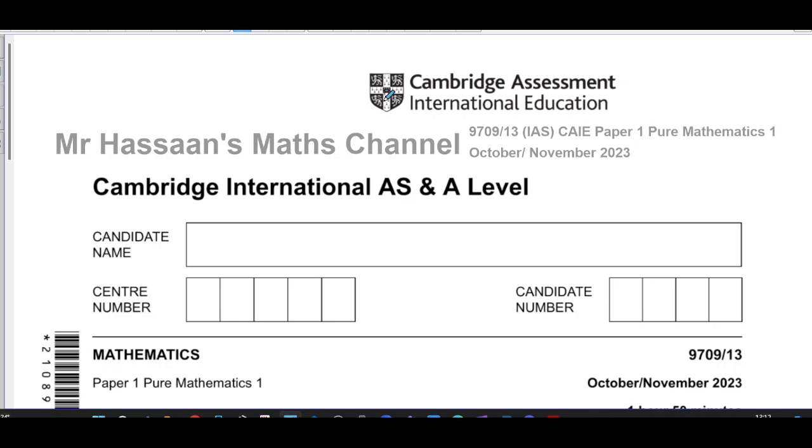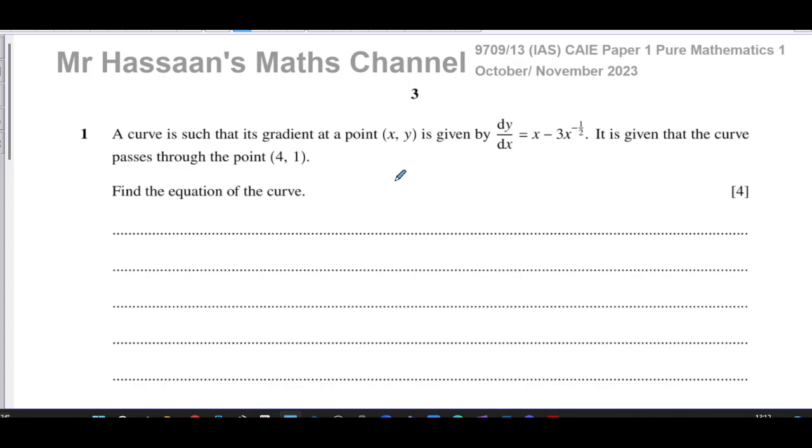I can explain keeping in mind the type of mistakes that students have made so you guys can learn from mistakes of each other. Question number one is about a curve such that its gradient at the point (x,y) is given by dy/dx equals x minus 3x to the power of negative a half. It is given that the curve passes through the point (4,1). Find the equation of the curve.